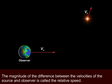The magnitude of the difference between the velocities of the source and observer is called the relative speed.